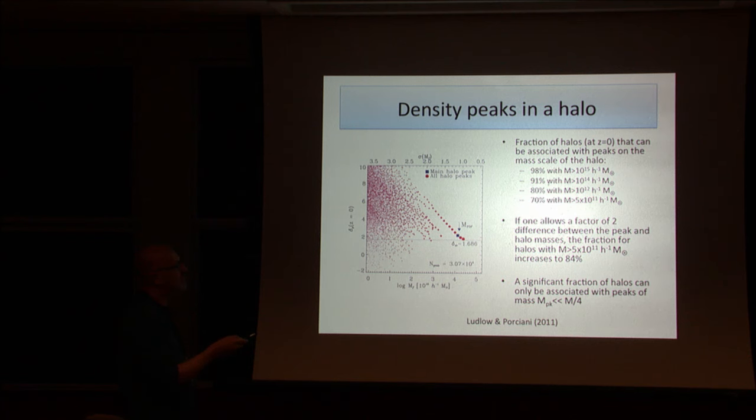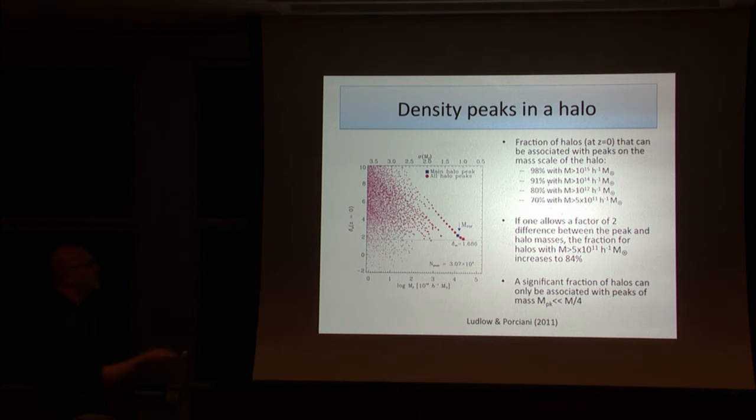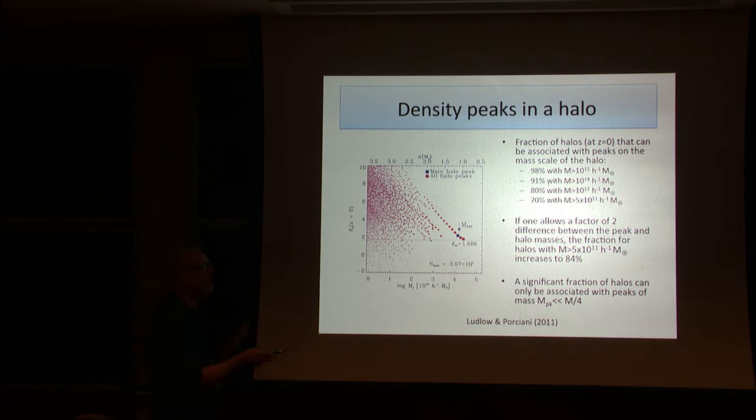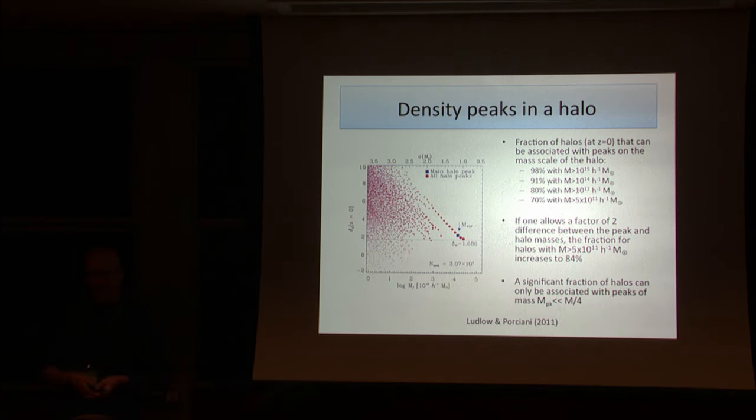If you actually look at the exact halo mass, if you allow a factor of two difference in the mass, this number goes up a bit. Instead of 70%, for instance, here we get 84%. But there is still a significant fraction of halos that are not associated with peaks on the right mass scale.